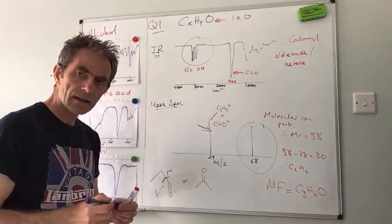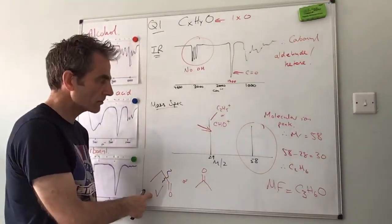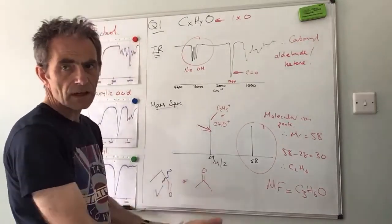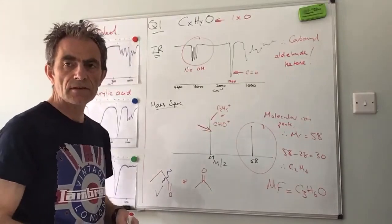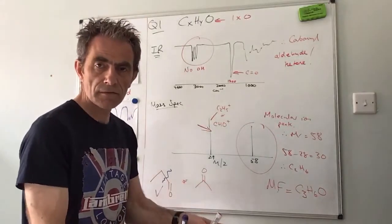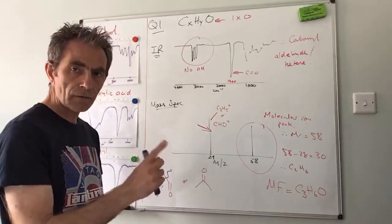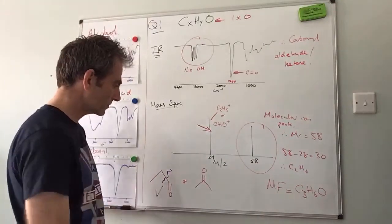So that was the answer. You had to narrow it down to that as being the answer to get full marks. Some of you kind of left it as an either/or - obviously you can't do that because the question didn't say suggest possible structures, it said structure singular. So you had to go for one option, so it was that one - propanal.